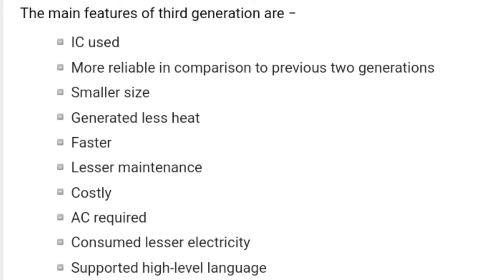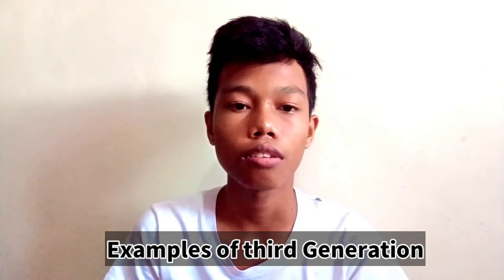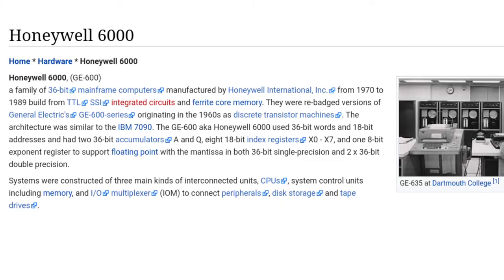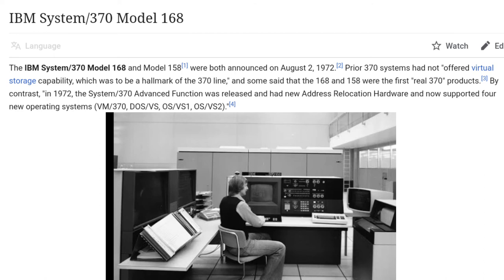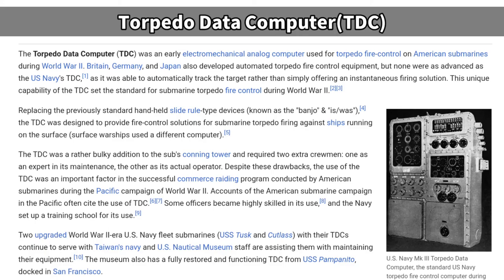The main features of the third generation are: use of ICs, more reliable in comparison to first and second generation, smaller size, generated less heat, faster, lesser maintenance, costly, required AC, consumed less electricity, and supported high-level languages. Examples of the third generation include: the Honeywell 6000 series, PDP (Personal Data Processor), IBM-370 and IBM-168, and TDC-316.